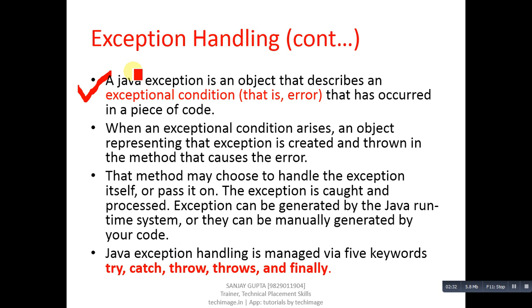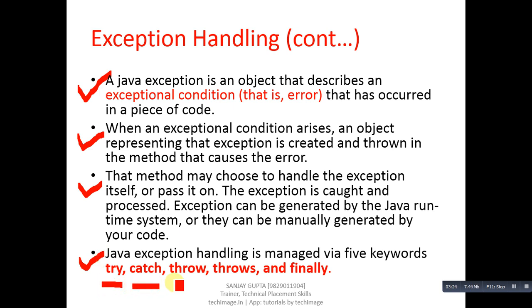A Java exception is an object that describes an exceptional condition — that is, an error that has occurred in a piece of code. When an exception condition arises, an object representing that exception is created and thrown in the method that causes the error. That method may choose to handle the exception itself or pass it on. Exceptions can be generated by the Java runtime system or manually generated by your code. Java exception handling is managed via five keywords: try, catch, throw, throws, and finally.